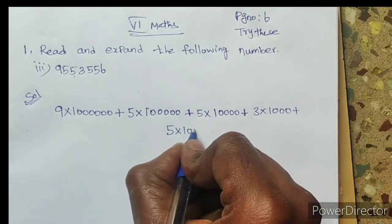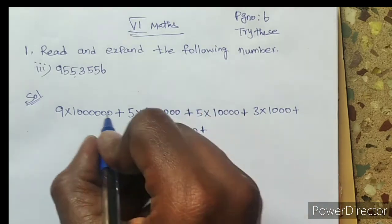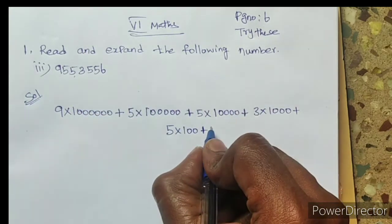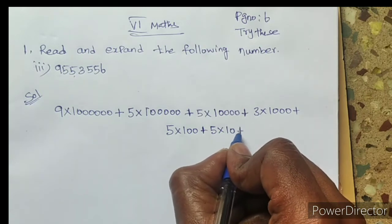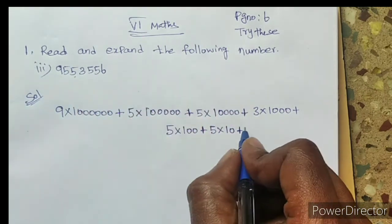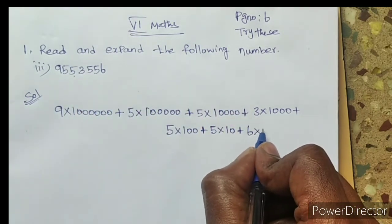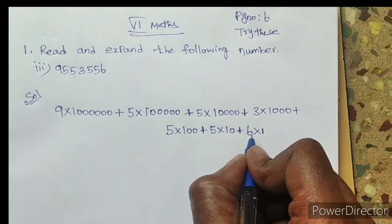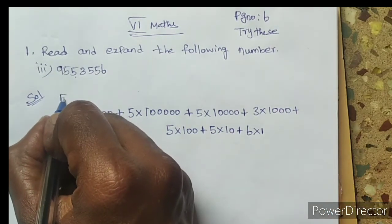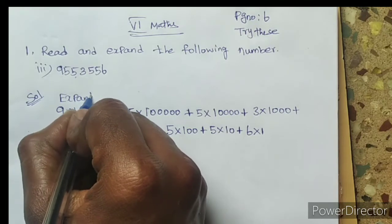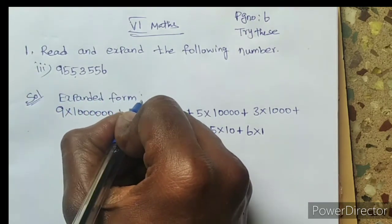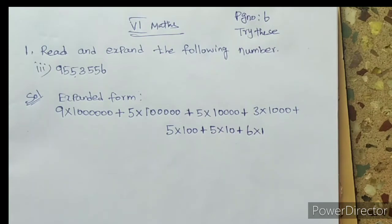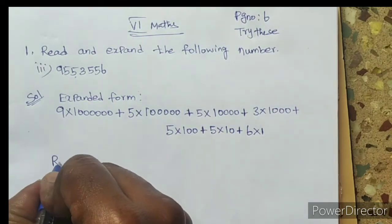Plus 5 is in tens place, so 5 × 10. Plus 6 is in ones place, 6 × 1. So this is known as expanded form, the expanded form of the given number.